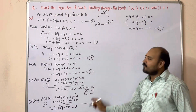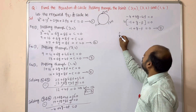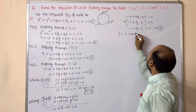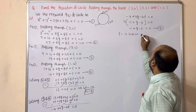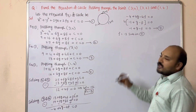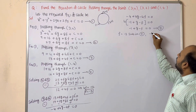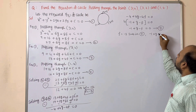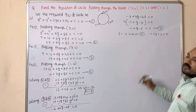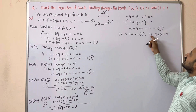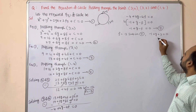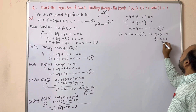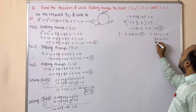We already found f = −3. Substituting into Equation 5: −1 + g − (−3) = 0, so −1 + g + 2 = 0, giving g + 1 = 0... wait — −1 + g + 3 = 0, so g + 2 = 0, therefore g = −2.